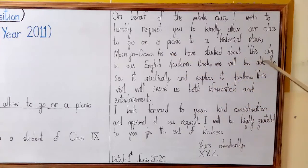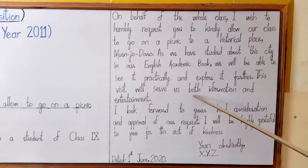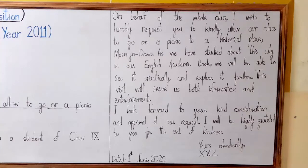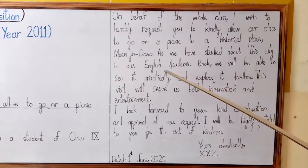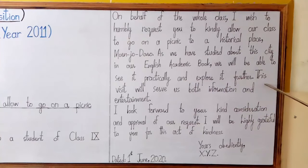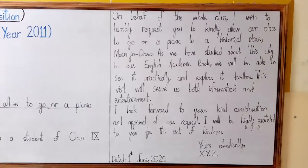As you are in grade nine, you need to justify your request with at least two reasons. The first reason: 'As we have studied about this city in our English academic book, we will be able to see it practically and explore it further.' The second reason: 'This visit will serve us both information and entertainment.' Whatever application you write, you have to justify your request with at least two reasons.